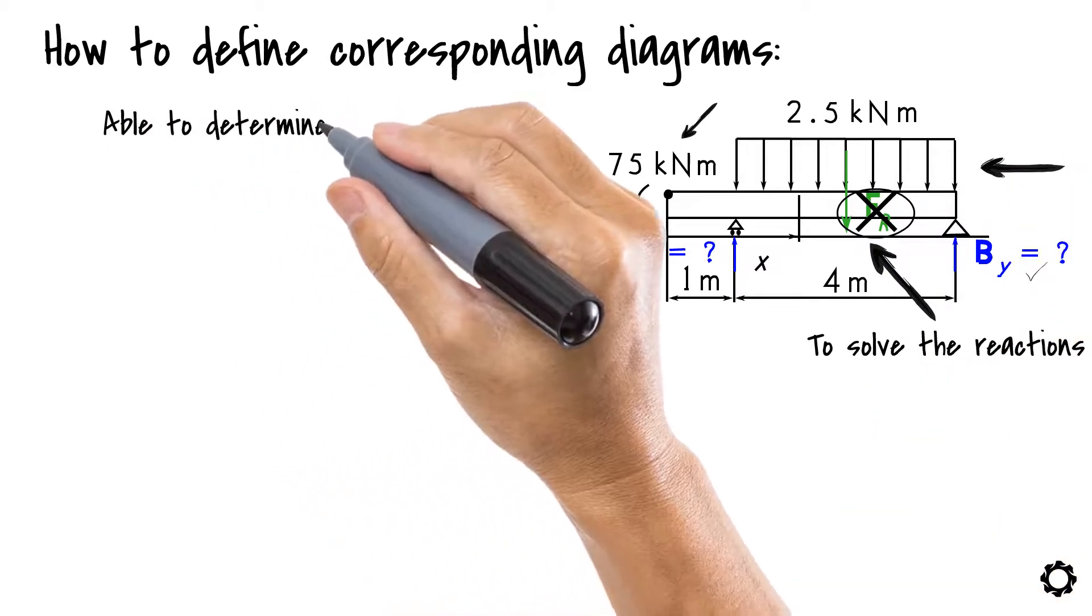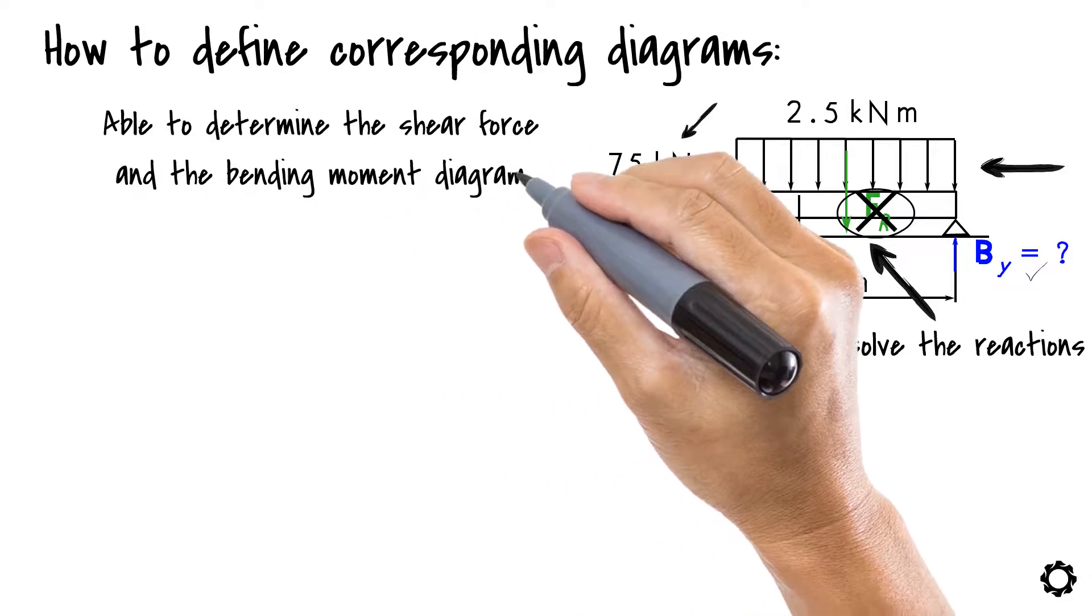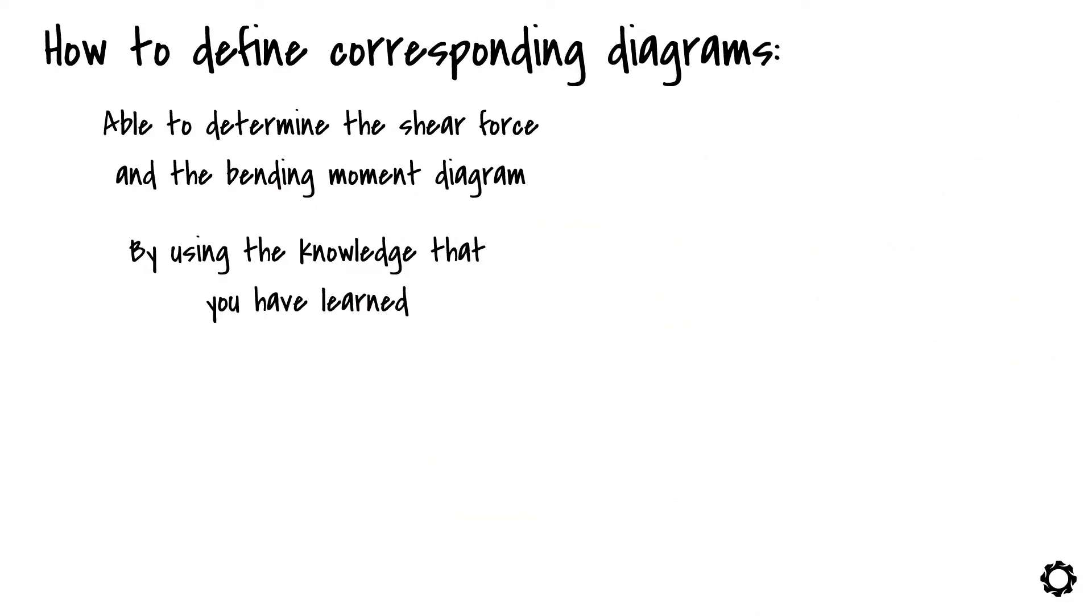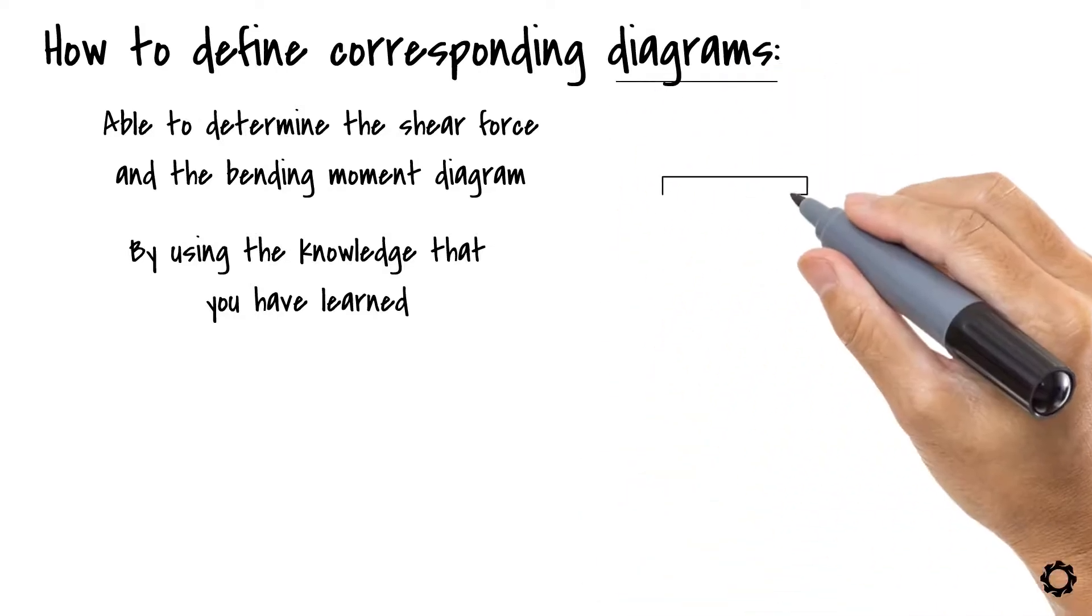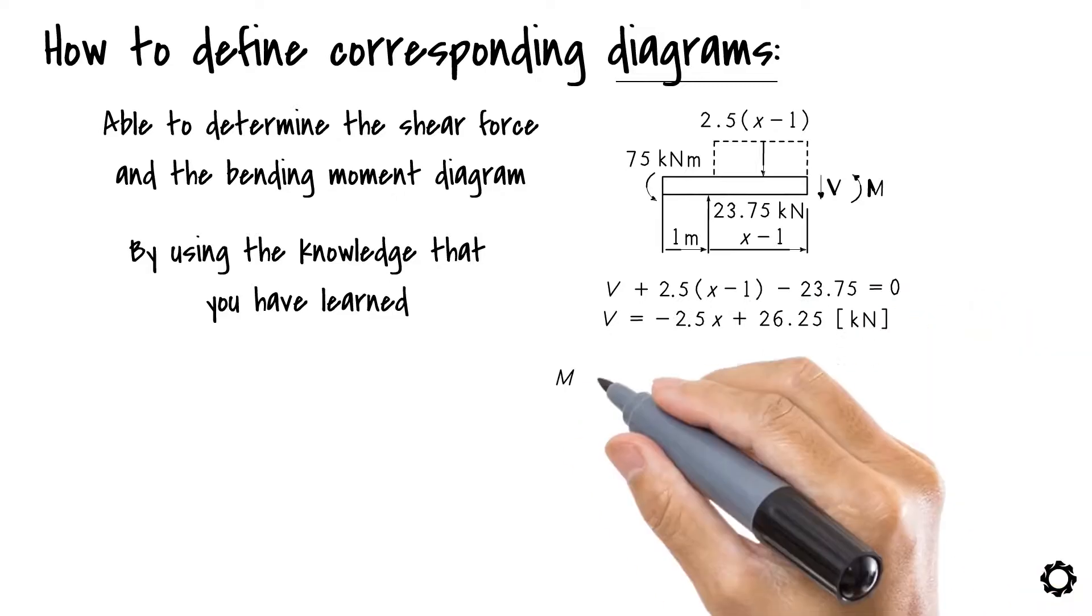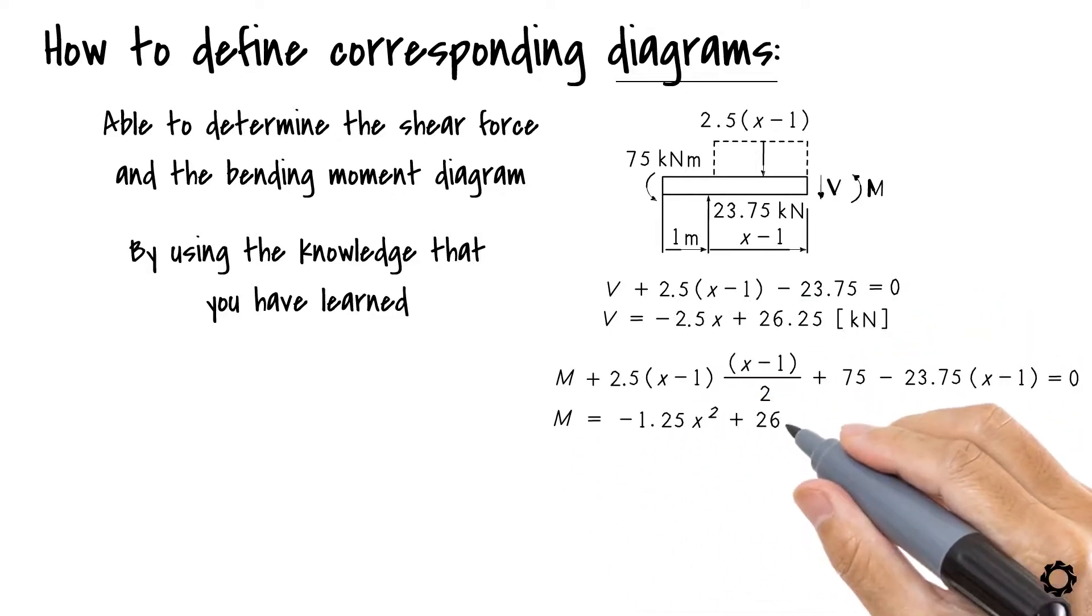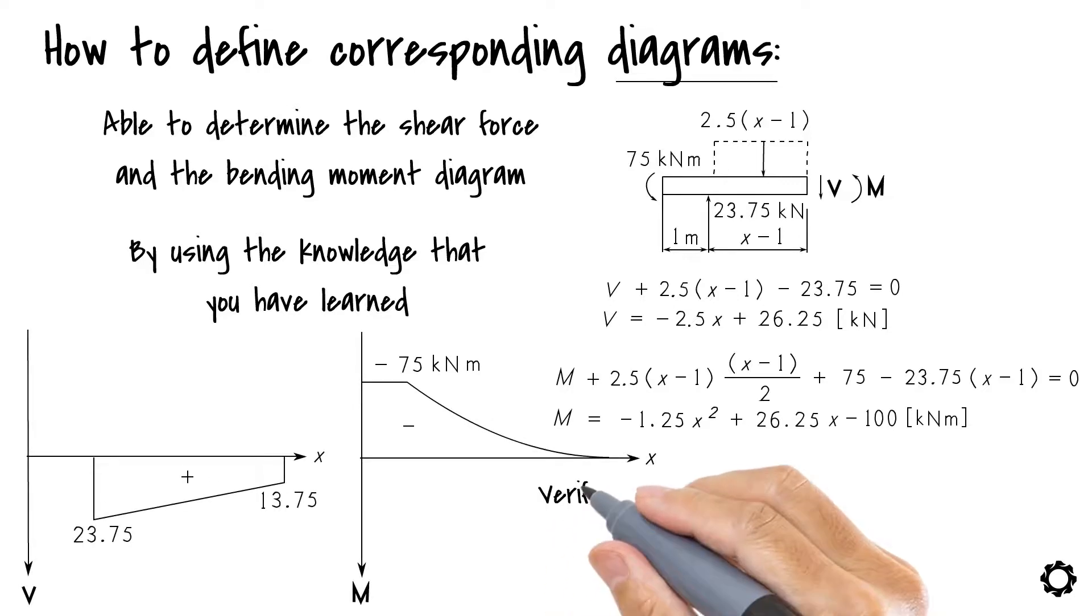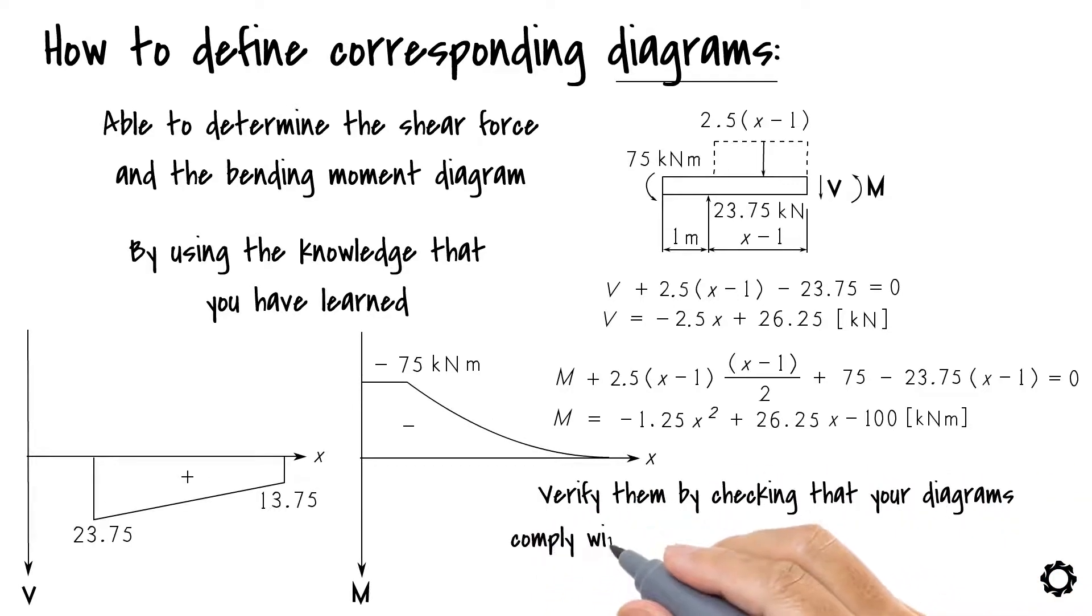Now you should be able to determine the shear force and the bending moment diagram. By using the knowledge that you have learned before about determining these diagrams, you can determine values for the shear force and moment by using the corresponding equations which you have formed for each investigated section of the structure. After you have drawn the diagrams, verify them by checking that your diagrams comply with the rules that have been mentioned in the previous videos.